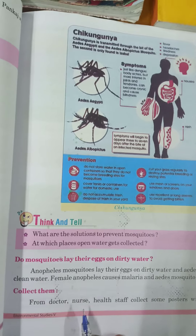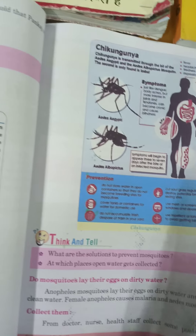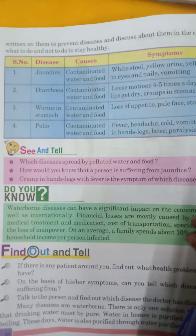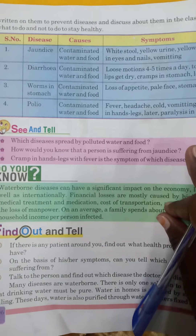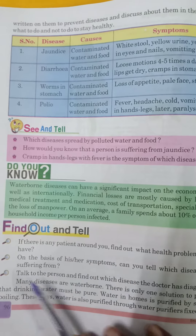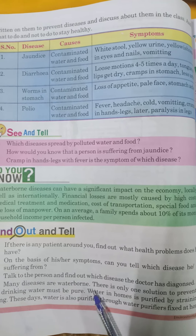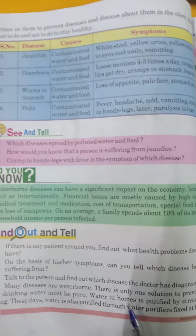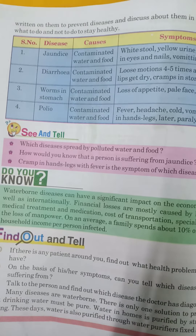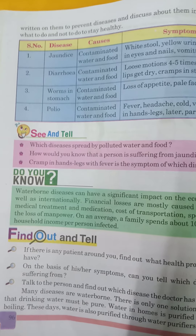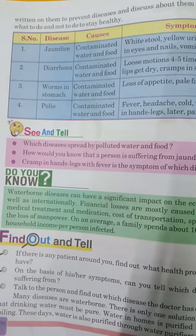Collect posters from doctors, nurses, and health staff with precautions. यहाँ पे कुछ diseases दी हैं जिनके कारण और symptoms दिए हैं, तो आप इसको पढ़ें और अच्छे से समझें। Many diseases are waterborne — तो कई सारी बीमारियाँ जल द्वारा पैदा होती हैं। There is only one solution to prevent them: drinking water must be pure. केवल एक ही सुझाव है इस चीज़ से बचने के लिए कि हमें पीने का पानी शुद्ध करके पीना चाहिए। Water in homes is purified by straining and boiling.